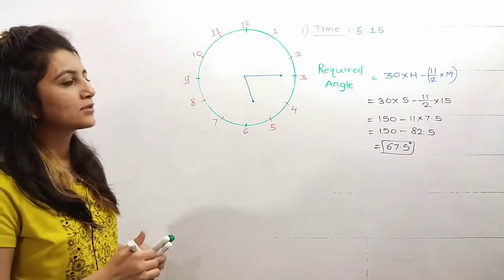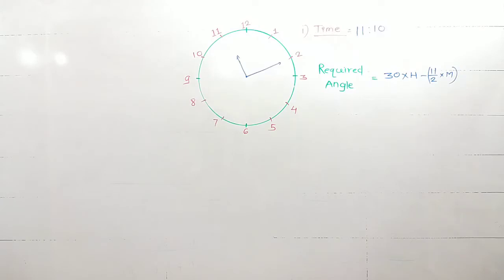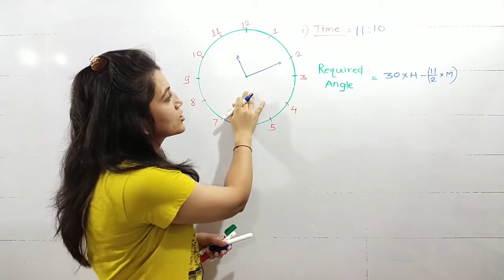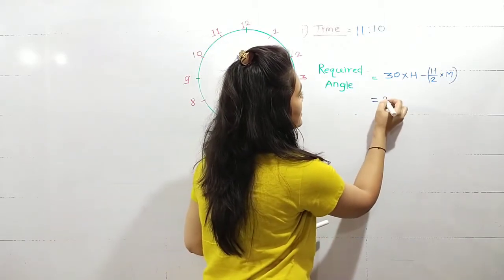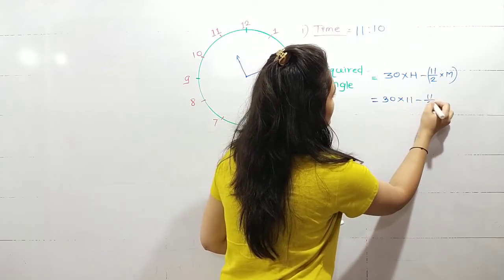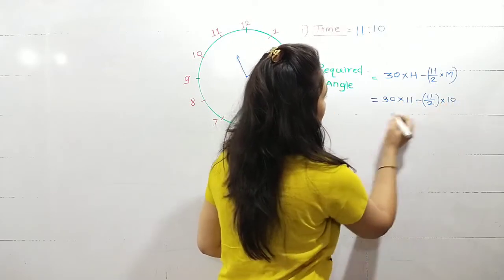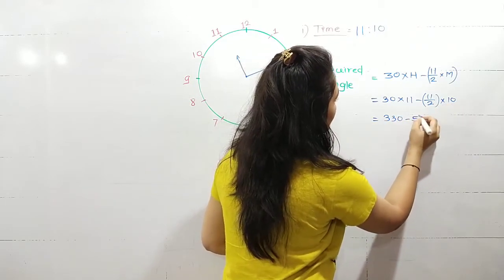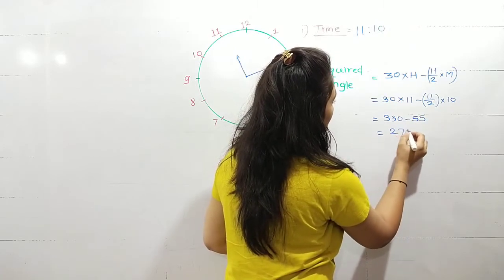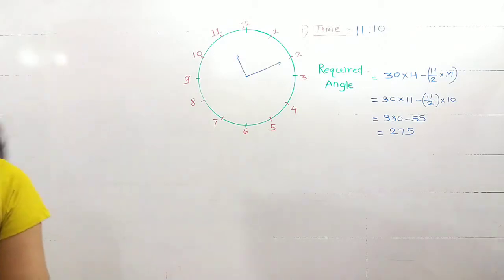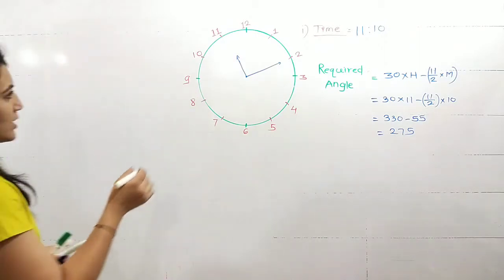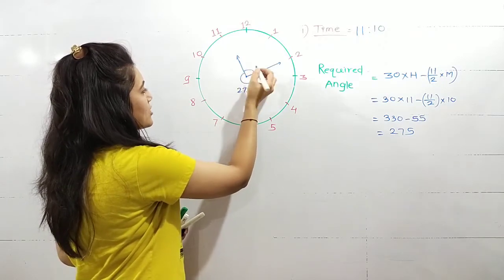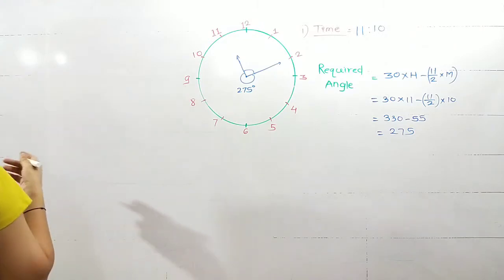The next time is 11:10. So 11:10 means h value is 11. Required angle will be 30 into 11 minus 11 by 2 into 10. So here the value is 330 minus 55, which is coming out as 275. So 275 degree, which angle will it be students? This could be the major angle. And if you need to find the minor angle, that will be 360 minus 275, which is equal to 85 degrees.